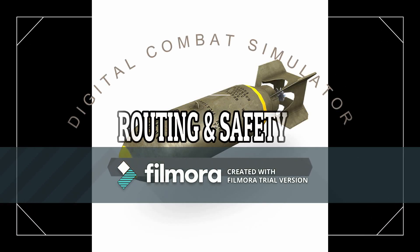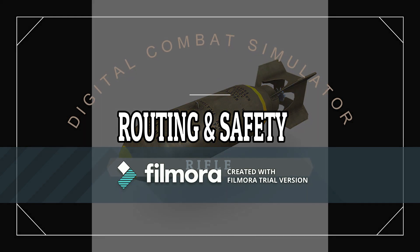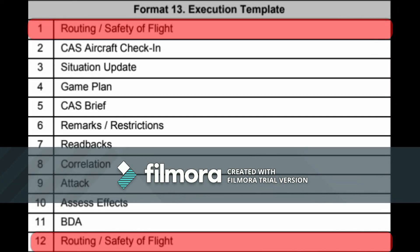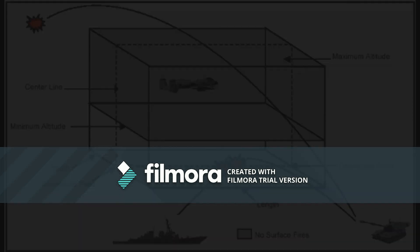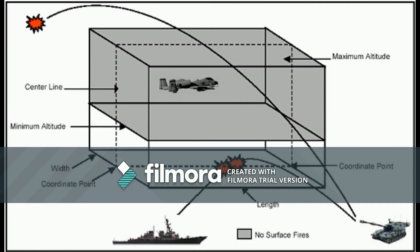Hi, this is Rifle. If you've watched the Type 1 CAS mission, this video sheds light on the routing and safety of flight employed at the beginning and end of that control with regards to the execution template or the 12-step CAS procedure. It's almost an afterthought, and in the end the JTAC is at times responsible for safety of the air crew and ground forces with relation to air-to-ground weapons employment. Routing and safety of flight are to be performed before and after any air execution.